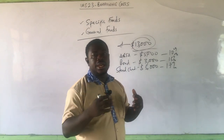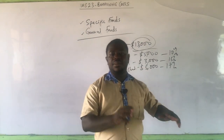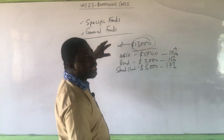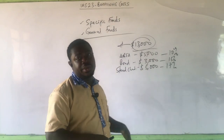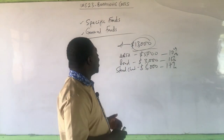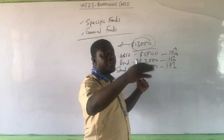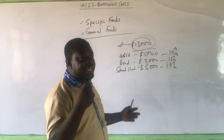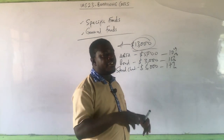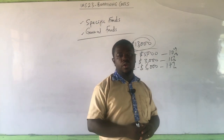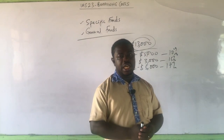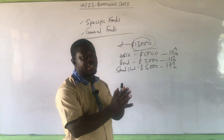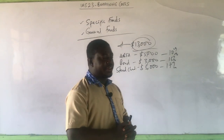In the same way for general borrowings, the money was already there in the business. Those funds also carry a rate of interest since they are loans. If they also come from different sources, we treat them the same way — especially when money is taken from the general pool of funds containing five different sources with five different interest rates. We find the weighted average interest rate and apply it on the portion used for constructing the qualifying asset.